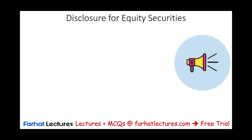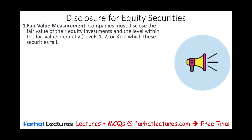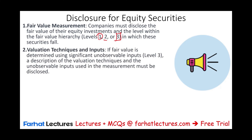For disclosures on equity securities, we need fair value disclosure — how do we come up with that fair value? If the equity is publicly traded, it's Level 1, pretty much self-explanatory. If it's Level 2 or Level 3 — especially Level 3 — we need to talk more about how we arrived at this valuation. There is a separate recording for how to determine fair value; I'm assuming you are familiar with Level 3, otherwise refer to the fair value lesson on Level 1, 2, and 3.